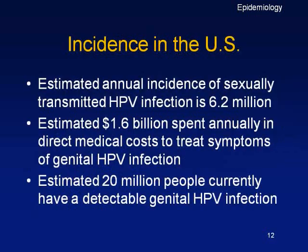As far as incidence is concerned, the annual incidence of sexually transmitted HPV is 6.2 million per year, and the cost to the health industry is about 1.6 billion dollars. There are currently about 20 million people with a detectable genital HPV infection — and detectable means they presented with symptoms or were investigated.